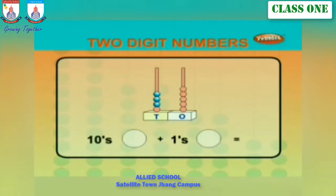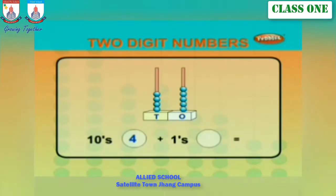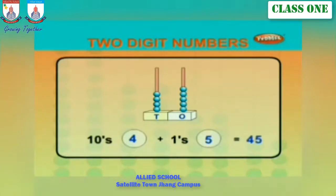Let's count the beads in the tens and ones position. One, two, three, four — there are four beads in the tens position. One, two, three, four, five — there are five beads in the ones position. Four tens plus five ones equals forty five.